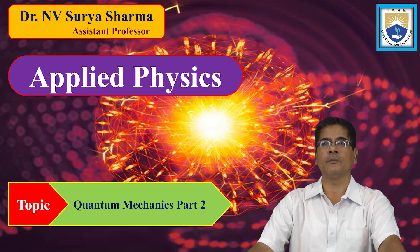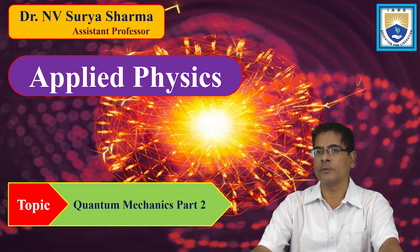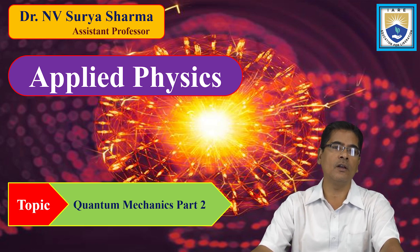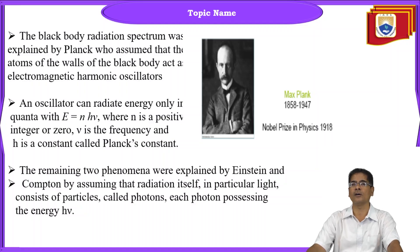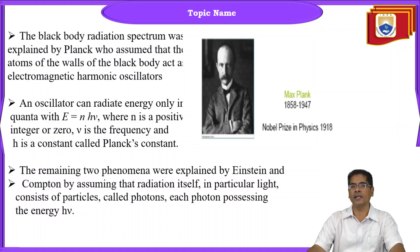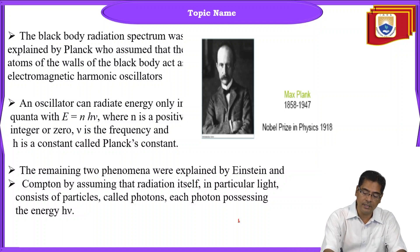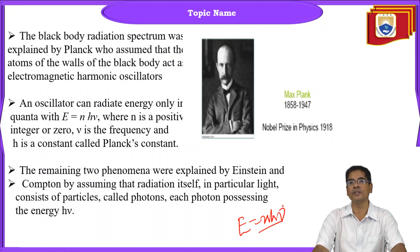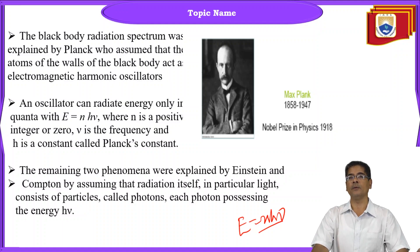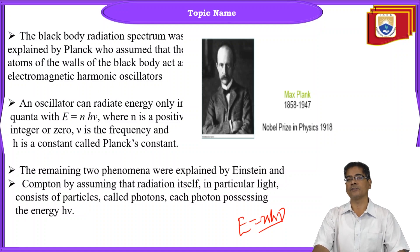The black body radiation spectrum was proposed by Planck's theory, proposed by Max Planck, who assumed that the atoms of the walls of the black body act as electromagnetic harmonic oscillators. An oscillator can radiate energy only in quantized energy given by E equals N h nu, where N is a positive integer or zero, nu is frequency, and h is Planck's constant.